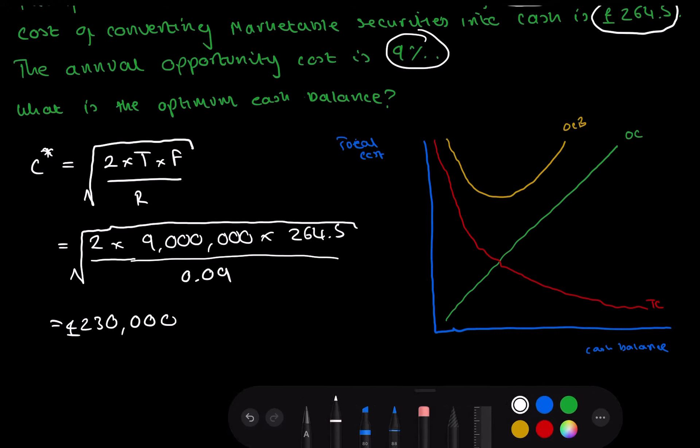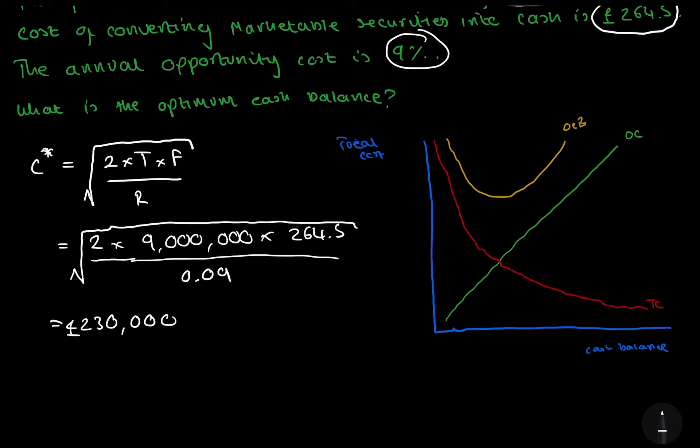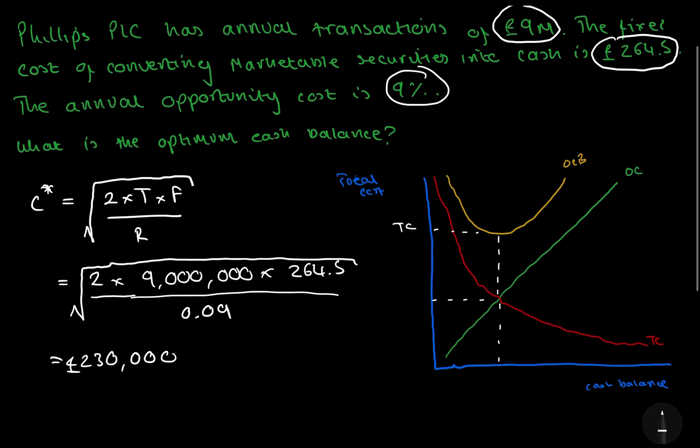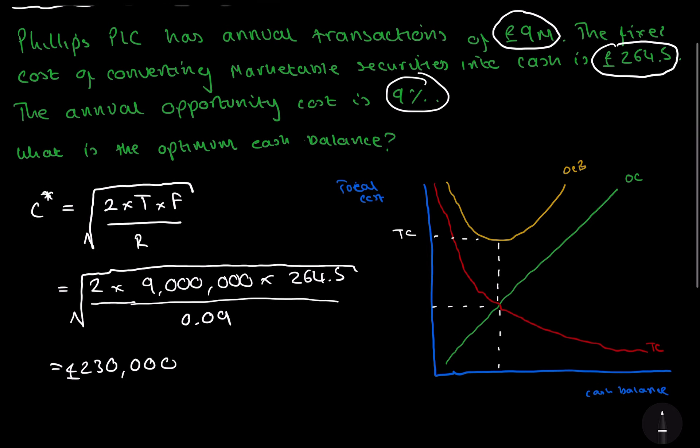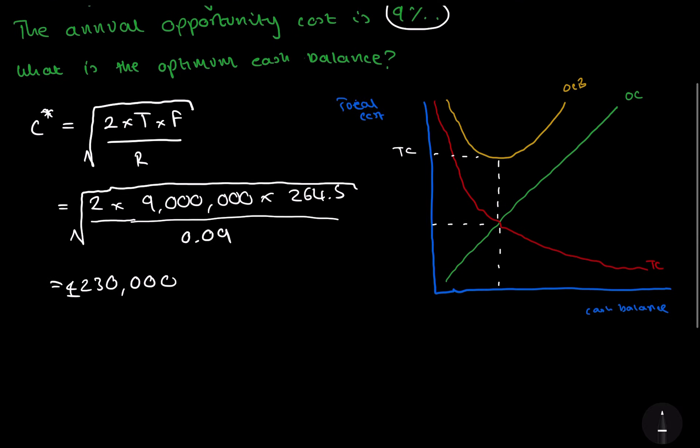And this is where our optimum cash balance comes from. So if I get a white or rather neutral colour, we will go up here. And this is the cash balance we want. Across here, this is the total cost, the cost for opportunity cost and fixed cost. And up here is the total cost including our opportunity cost and fixed cost.